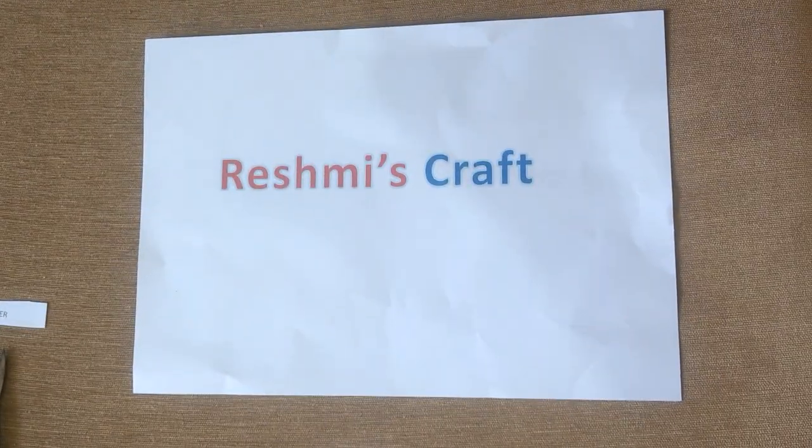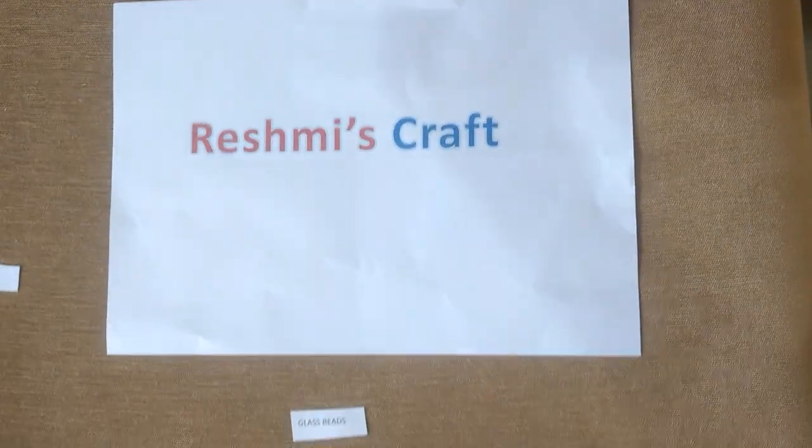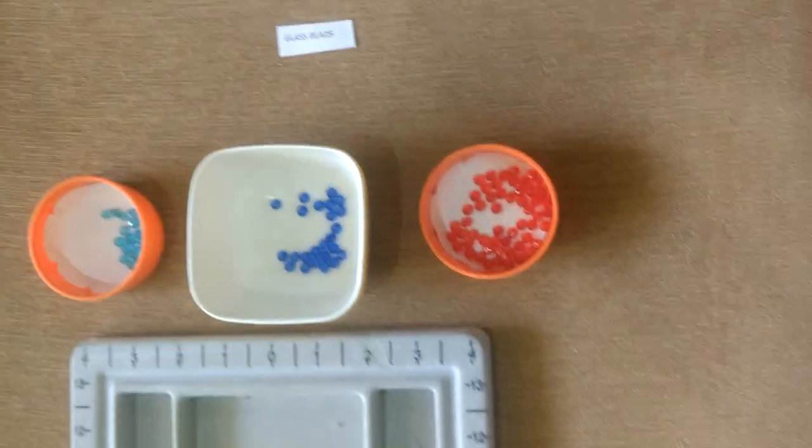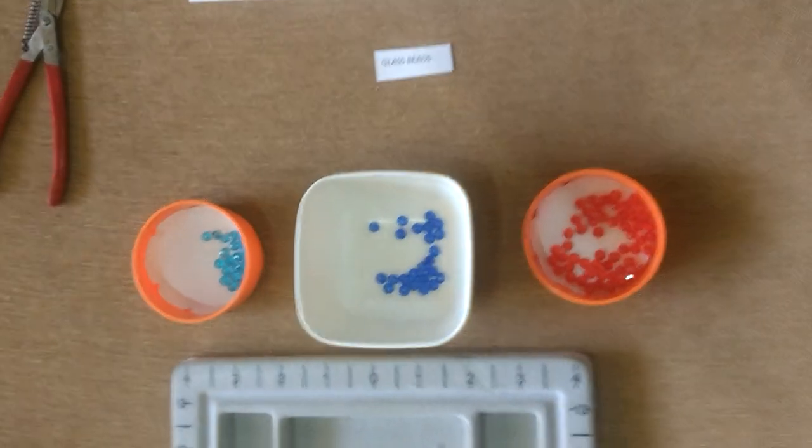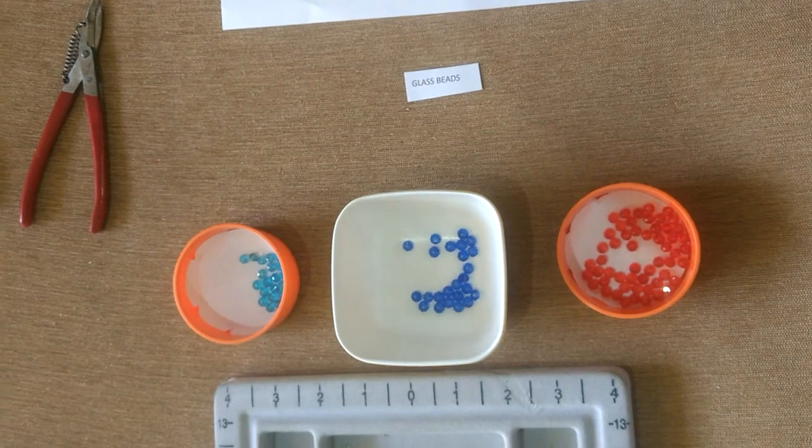Welcome to Rashmi's craft once again. Today we are going to make a double string necklace using crystal glass beads in light blue, dark blue, and red color. It's going to look really pretty, so let's get going.